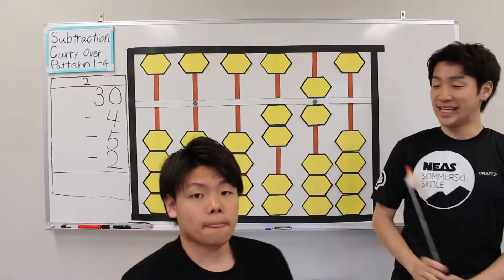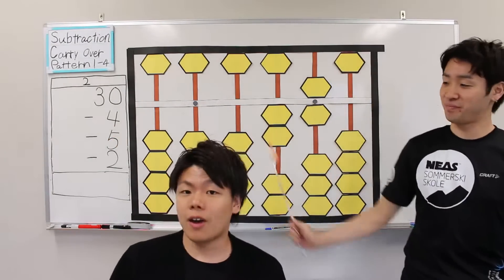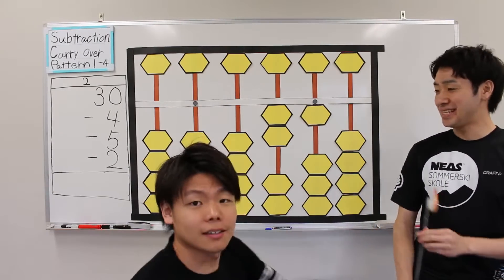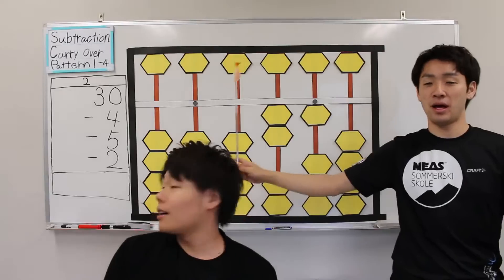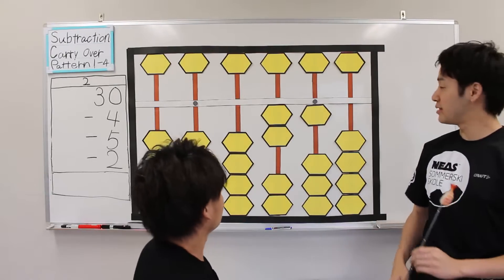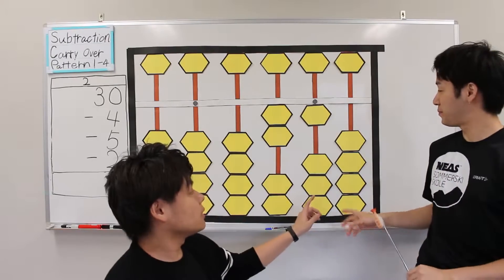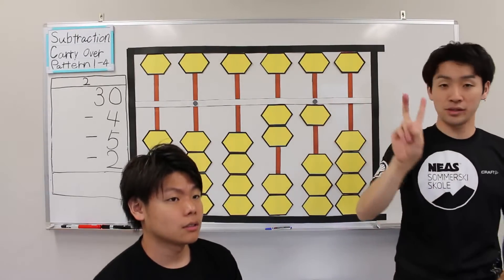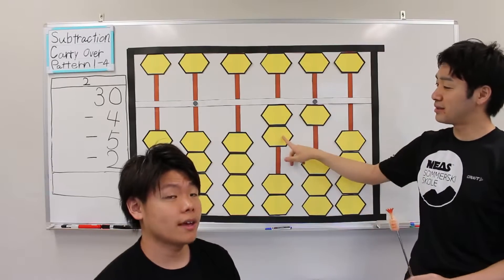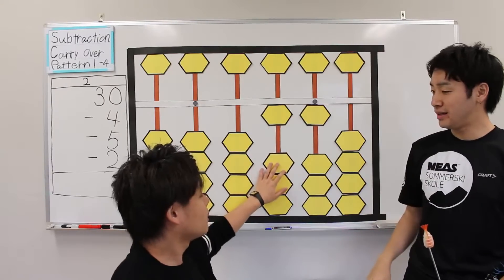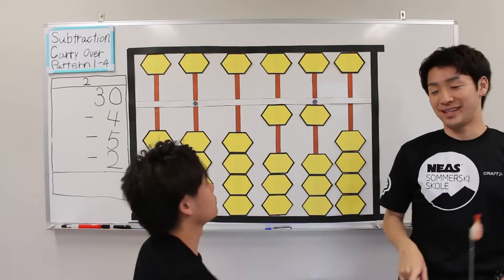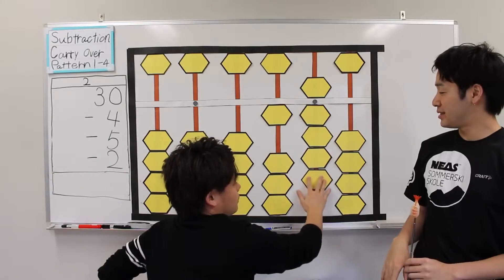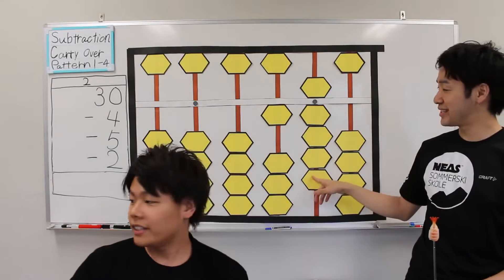Okay, next: minus 5. Then finally: minus 2. Nothing? No. 2 subtract 2, subtract 10, and add 8. That's right. So the answer is 19.